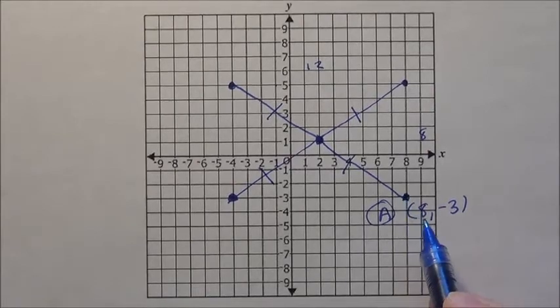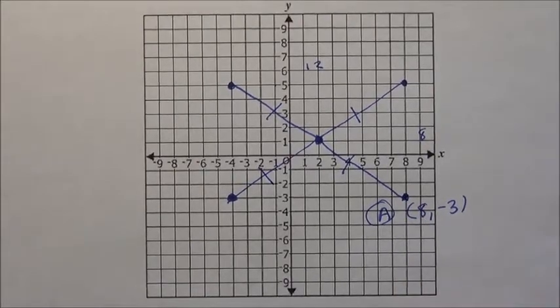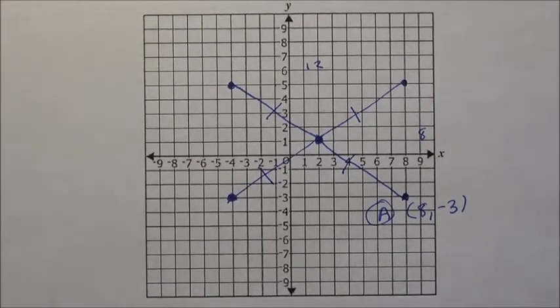But again, we found point A right here, choice A, which was at the point 8, negative 3.